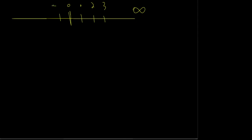Of course, the number line has a negative side, and all of a sudden I have integers — all the way down to negative infinity. What is neat about the integers is nothing exists in between them. With counting numbers or counting things, the gaps between them are what we call discrete. These are going to be discrete numbers.